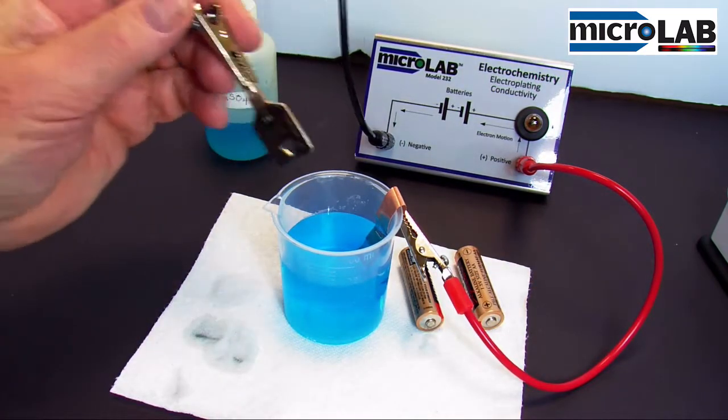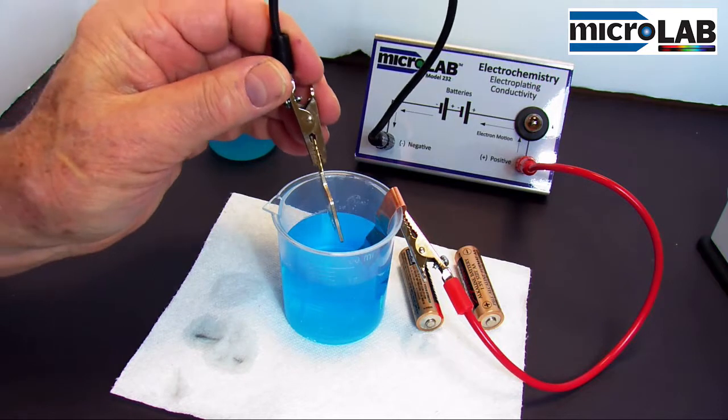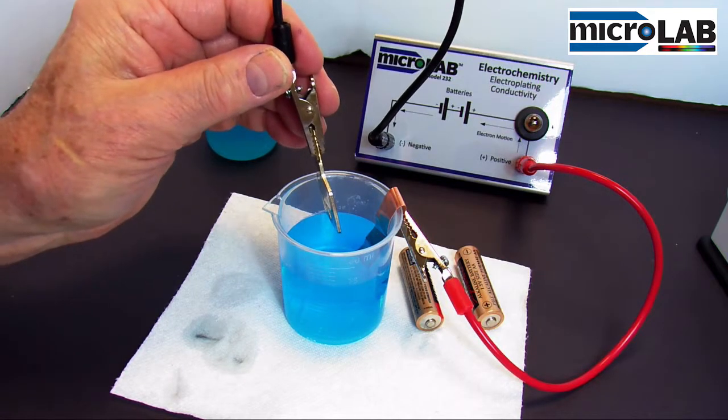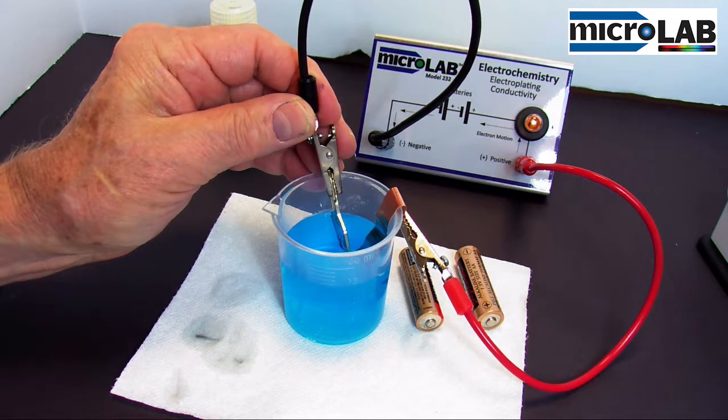And let's watch the light bulb. Same experiment as before except that copper is in there connected to the positive electrode. You see the light bulb lit up a little bit.